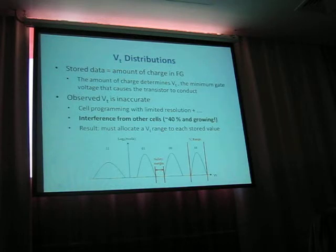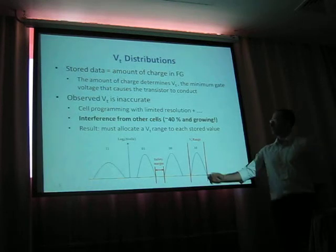The observed Vt is inaccurate due to cell programming, overshooting, various factors. A major factor is the interference from other cells. It's responsible for more than 30% of the distribution's width and growing.